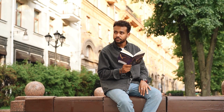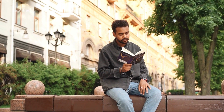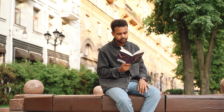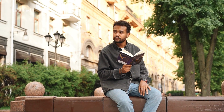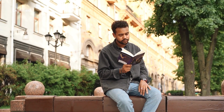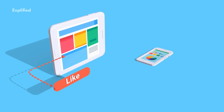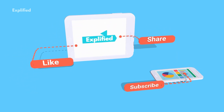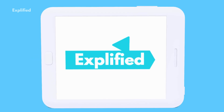Final thoughts: vocabulary and context questions might seem tricky, but with practice and these strategies, they'll become second nature. Remember to focus on the surrounding context, eliminate unrelated options, and trust your reasoning. If you found this video helpful, like, share, and subscribe to Explified for more TOEFL tips. Let us know in the comments which strategy you'll use first. See you in the next video!